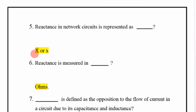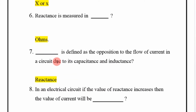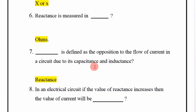Reactance in network circuits is represented as X, and is measured in ohms. Reactance is defined as the opposition to the flow of current in a circuit due to its capacitance and inductance.